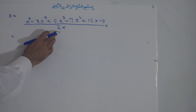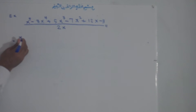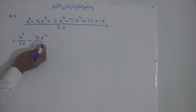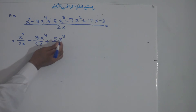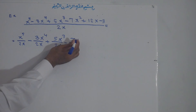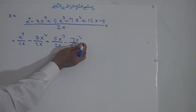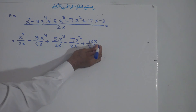What we do is divide each term of the polynomial separately by this monomial. That gives us: x to the power of 5 over 2x, minus 3x to the power of 4 over 2x, plus 5x to the power of 3 over 2x, minus 7x to the power of 2 over 2x, plus 12x over 2x.